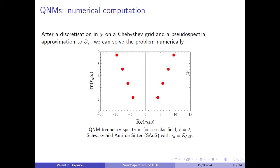After a discretization of our compactified radial coordinate on a Chebyshev grid and a spectral approximation to the derivative operators, we can treat the problem numerically. If we calculate the eigenvalues of the L operator after discretization, we get the quasi-normal mode frequencies. This is an example of the output of such a calculation.